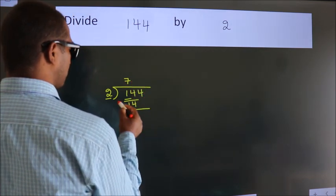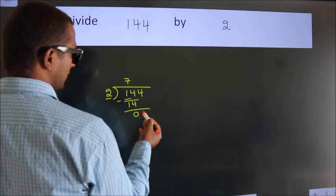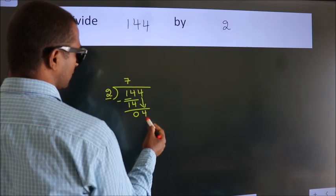Now we should subtract. We get 0. After this, bring down the beside number. So 4 down.